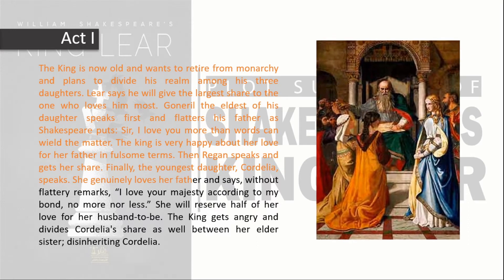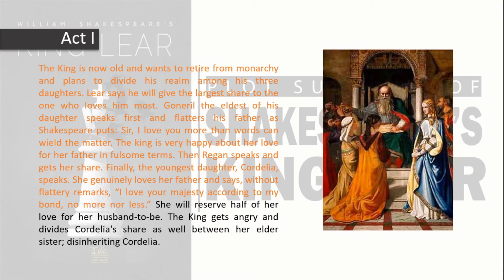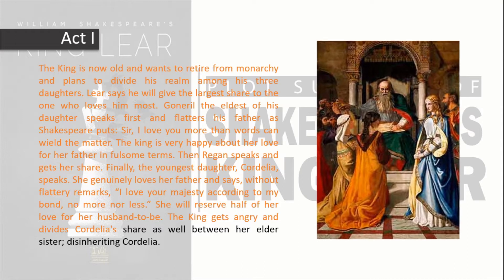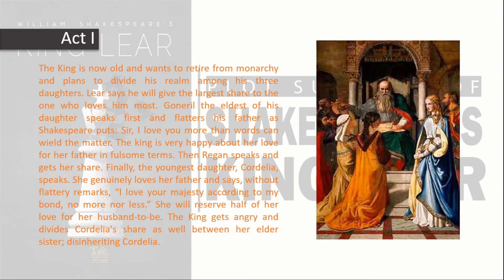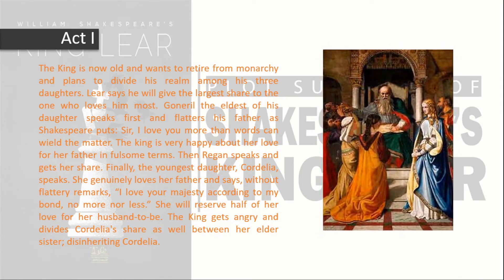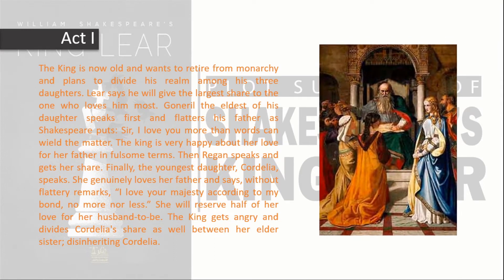Then Regan speaks and gets her share. Finally, the youngest daughter Cordelia speaks. She genuinely loves her father and says, without flattery: 'I love your majesty according to my bond, no more nor less.' She will reserve half of her love for her husband to be. The king gets angry and divides Cordelia's share between her elder sisters, disinheriting Cordelia.